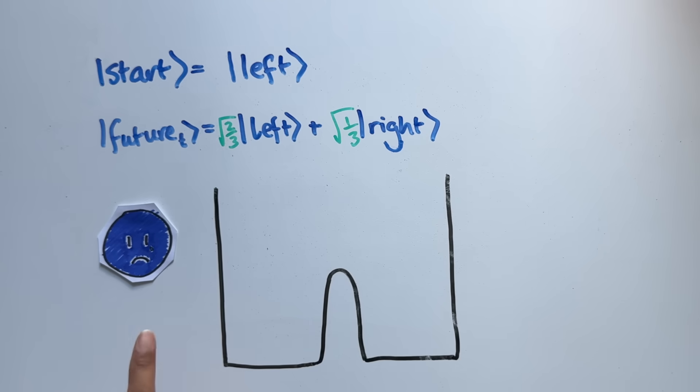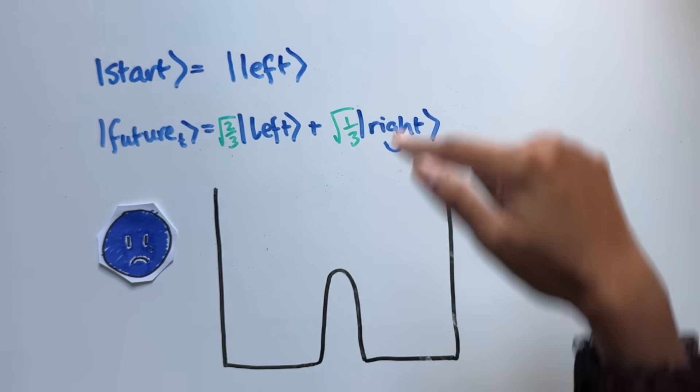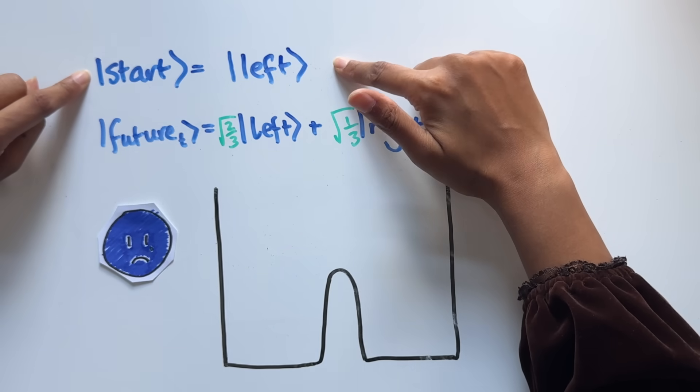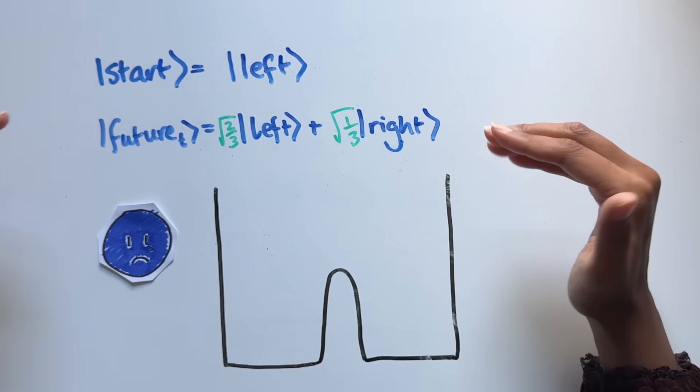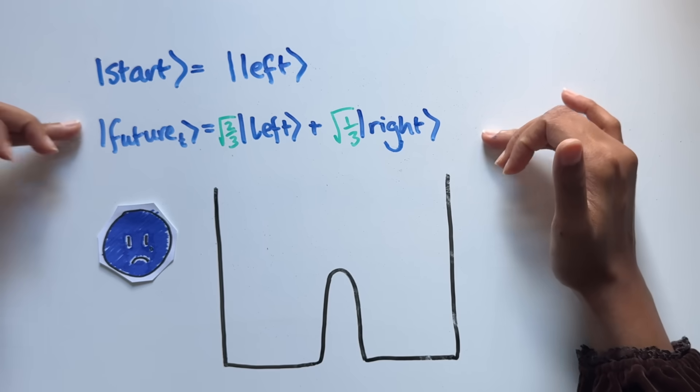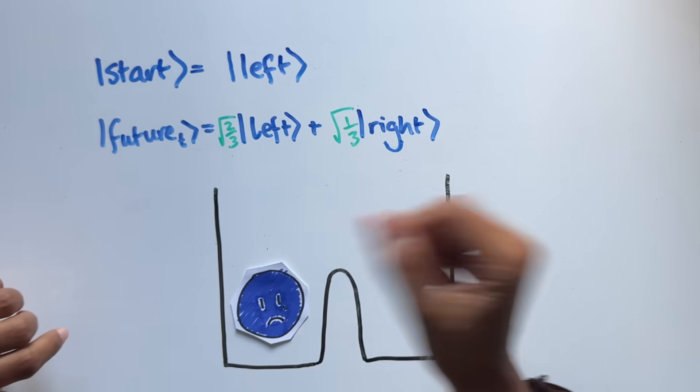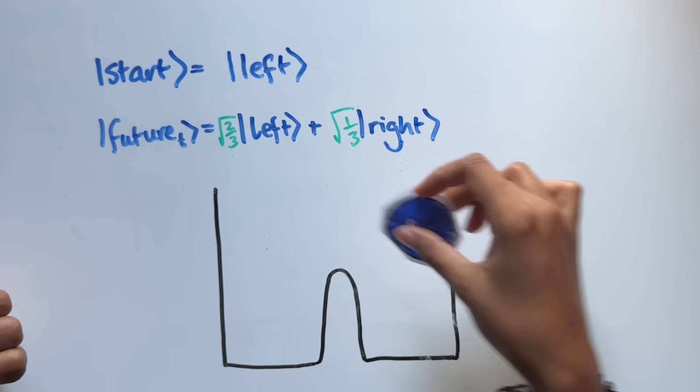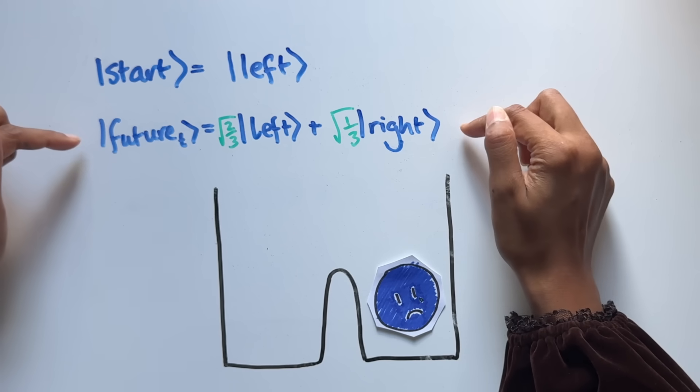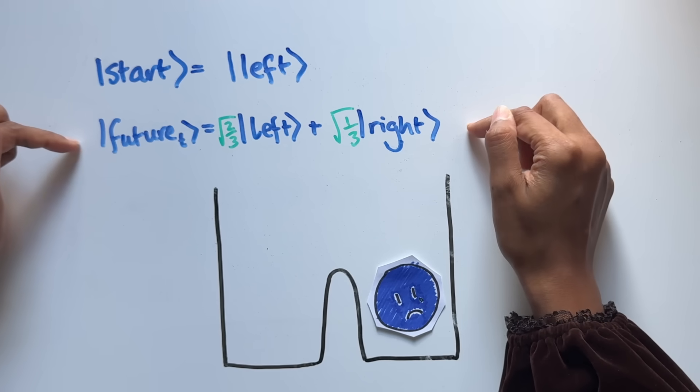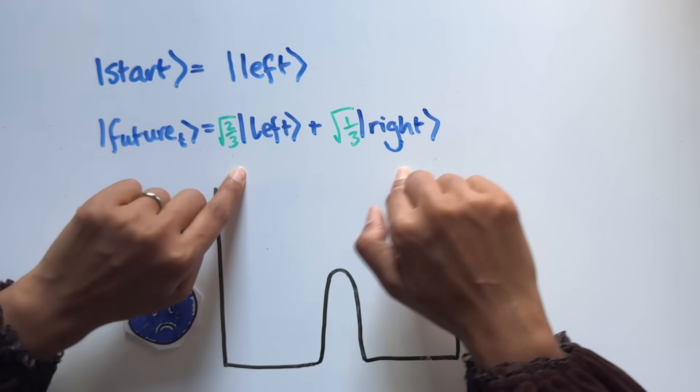Here's what I mean. In our example with the double well, as long as we knew exactly the start state of the electron, we could always figure out what the future state of the electron is, and it will just tell us this is the future state. The Schrödinger equation will never give a result like, well, t seconds in, maybe the state. Maybe it's in the left one, but maybe it's in the right one. Instead, it deterministically tells us this is the future state with no doubt.